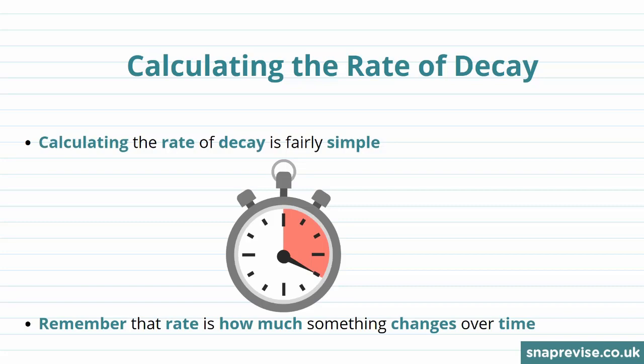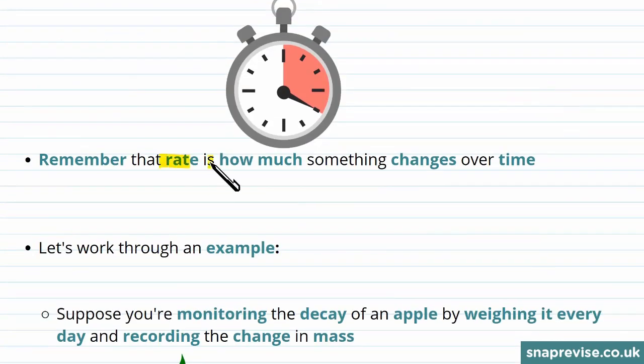We can actually calculate the rate of decay, and calculating the rate of decay is fairly simple. Remember, rate is how much something changes over time, so rate equals change over time. Now let's work through an example.